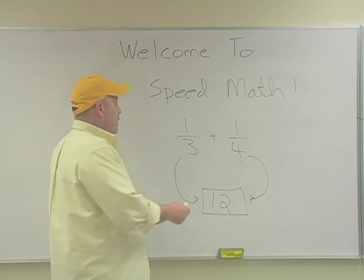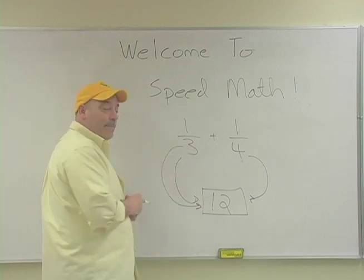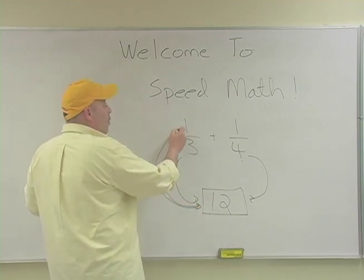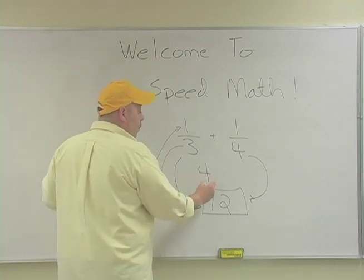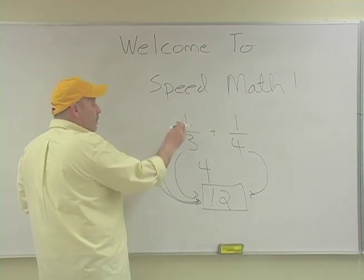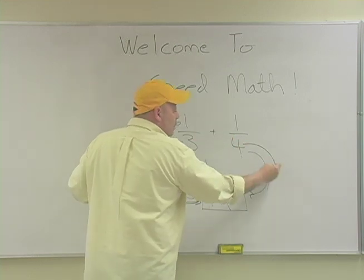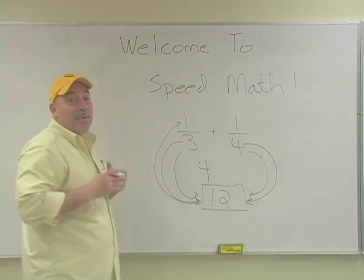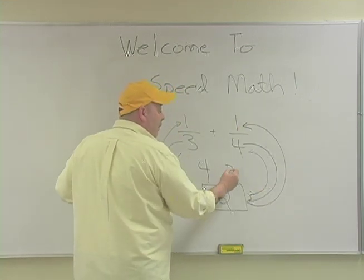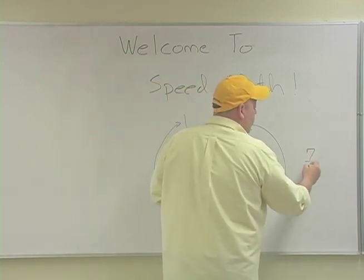What I've taught your sons and daughters is this: how many times does the number three go into twelve? The answer is four. So take that number four and multiply it by one, and that becomes four. Three goes into twelve four times, and four times one is four. Now for the second fraction — four goes into twelve three times, and three times one is three. Simply bring down your plus sign, and your answer is seven over twelve.